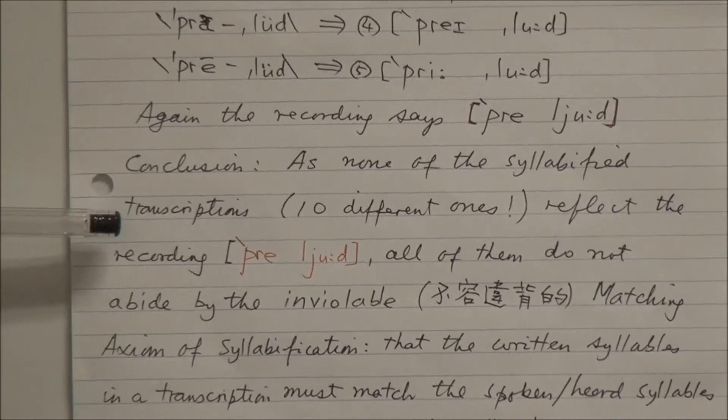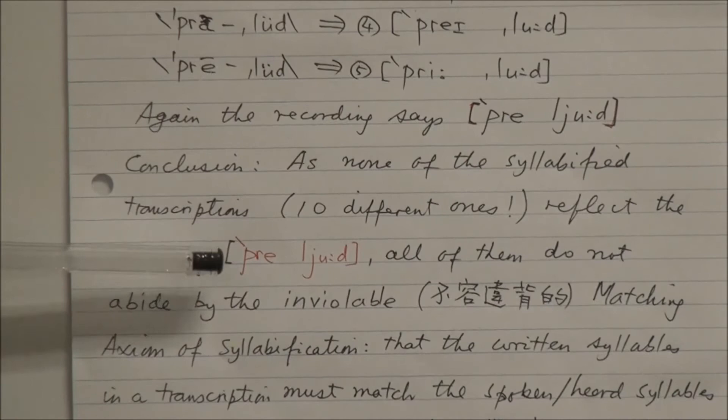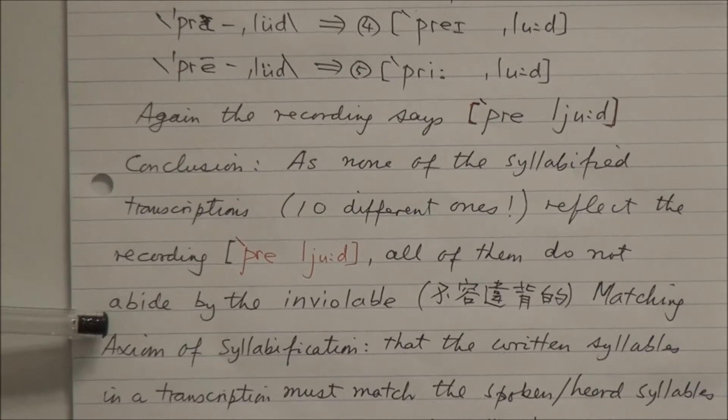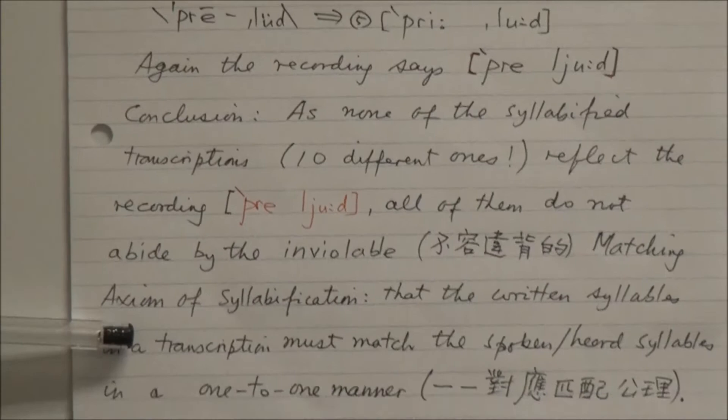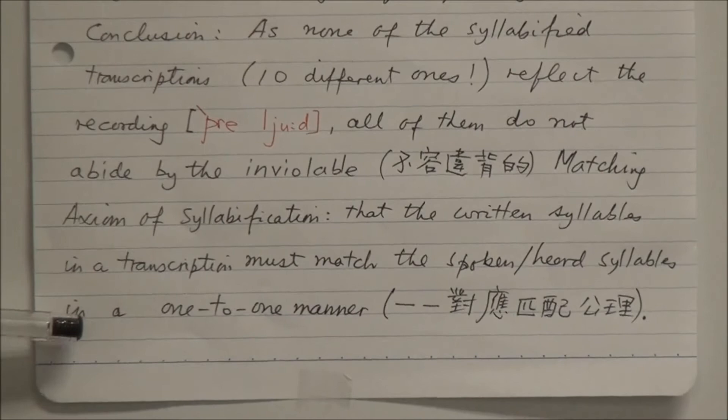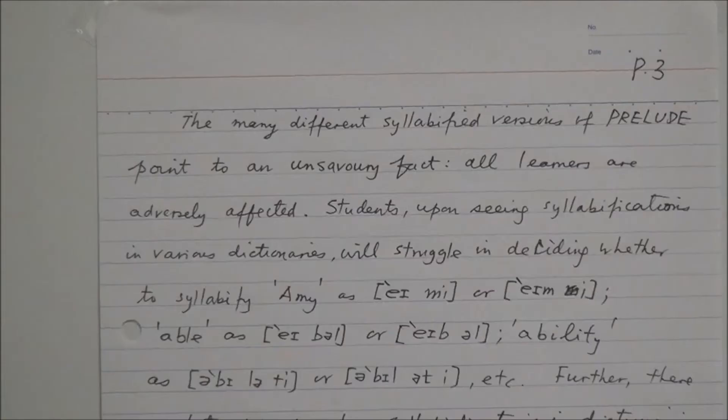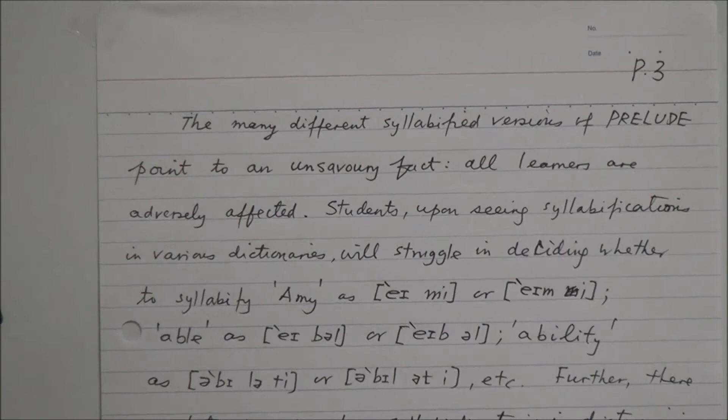Conclusion: As none of the syllabified transcriptions — ten different ones in all — reflect the recording 'prelude,' all of them do not abide by the inviolable matching axiom of syllabification: that the written syllables in a transcription must match the spoken or heard syllables in a one-to-one manner.